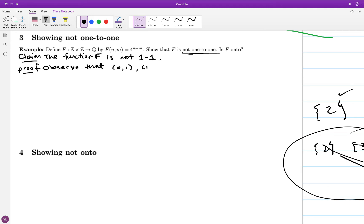So let me just observe that these two different elements (0,1) and (1,0) in the domain Z × Z both get sent to the same output. First we observe that (0,1) is not equal to (1,0), ordered pairs are not equal unless each of their components are equal.